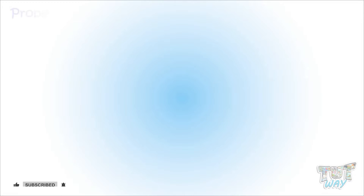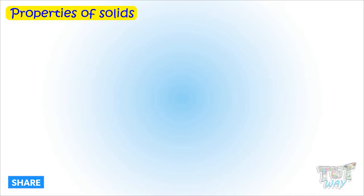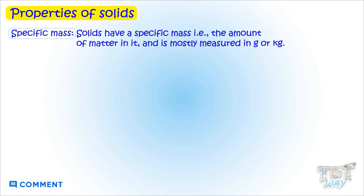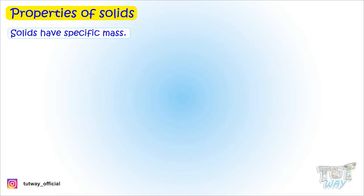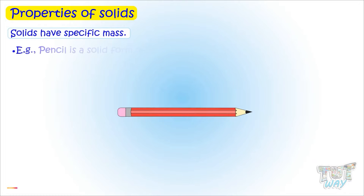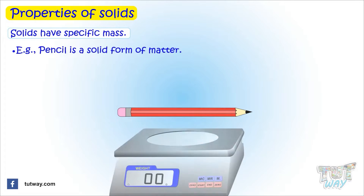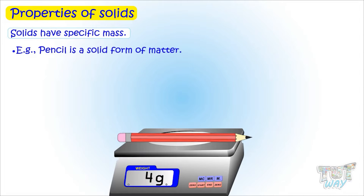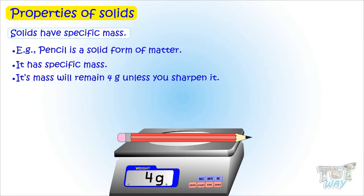Properties of solids — first, specific mass. Solids have a specific mass, that is the amount of matter in them, and it is mostly measured in grams or kilograms. For example, a pencil is a solid form of matter and its mass or weight is about 4 grams. So solids have a specific mass; it will remain 4 grams unless you sharpen it or reduce it in some way.